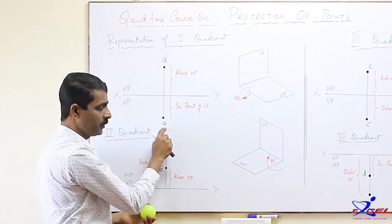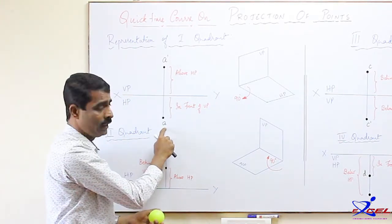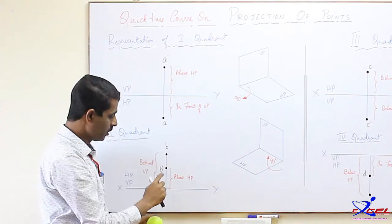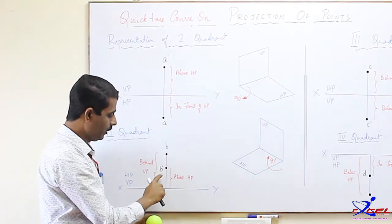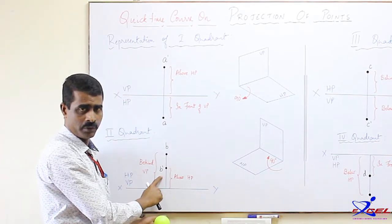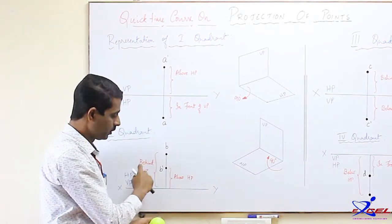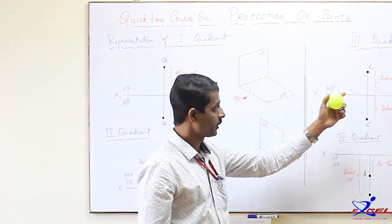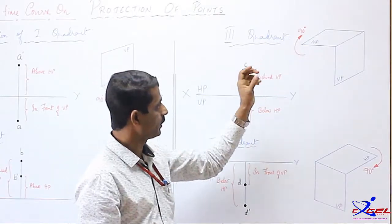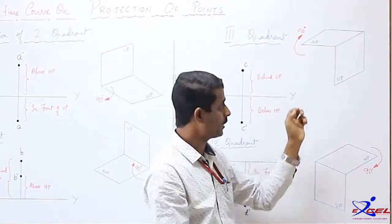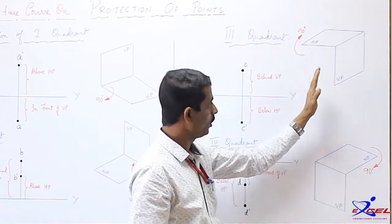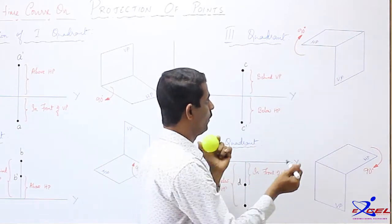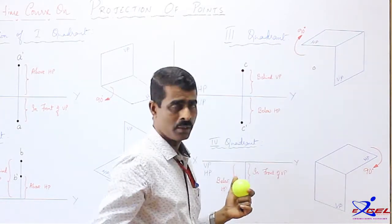In the naming convention, the top view is always A and the front view is A dash — similarly, in the second quadrant, the top view is A and the front view is B dash. In the third quadrant, the object is below HP and behind VP.